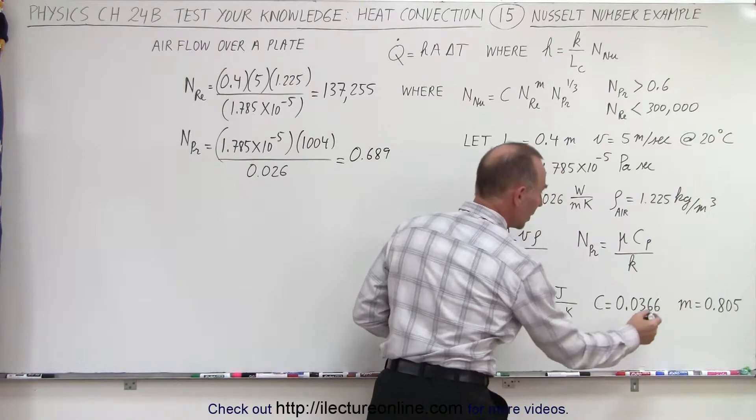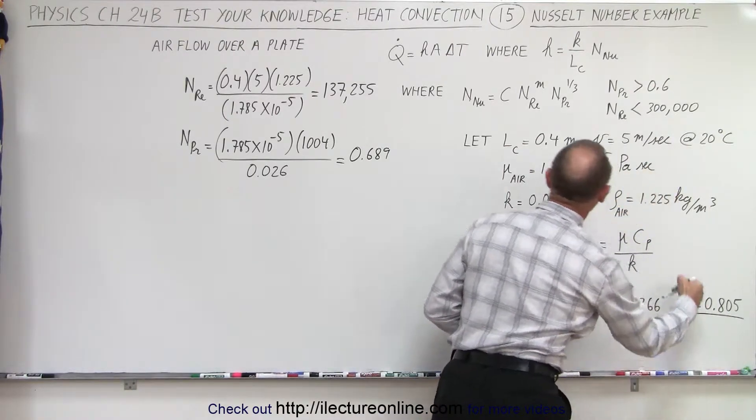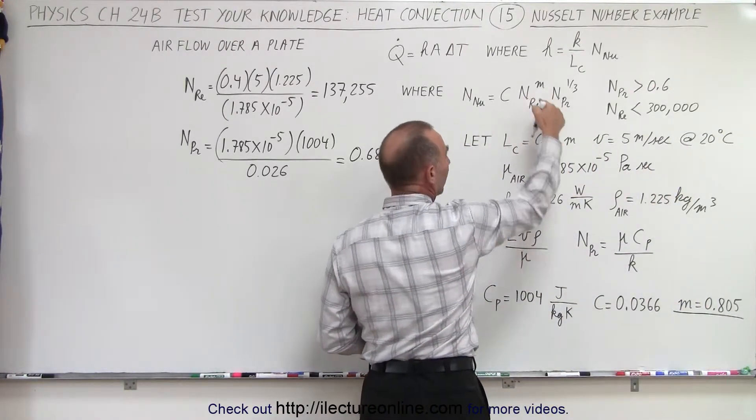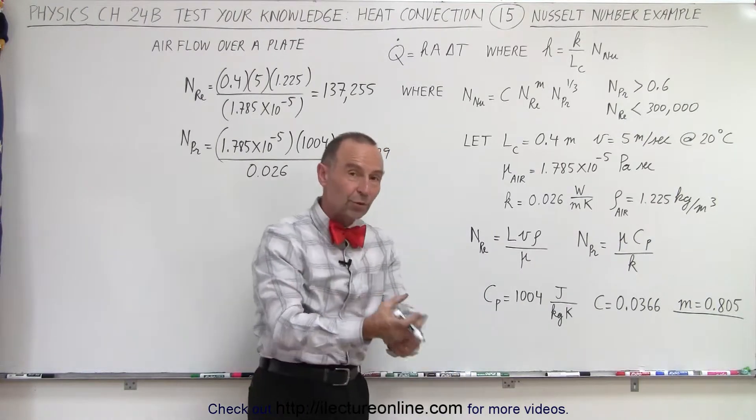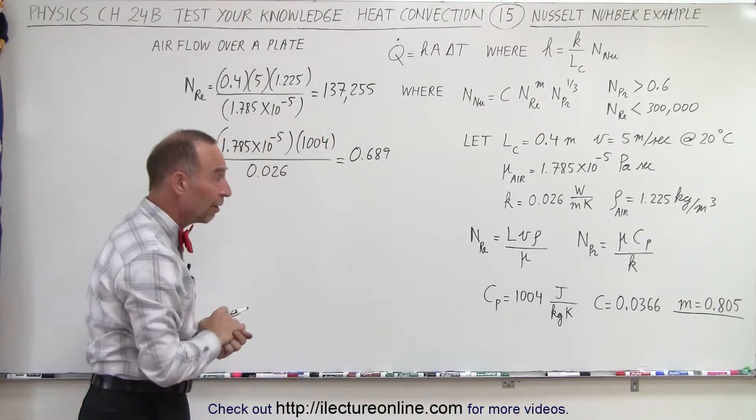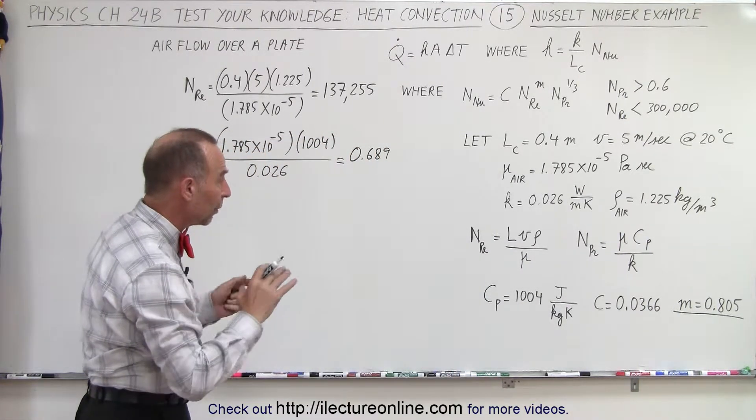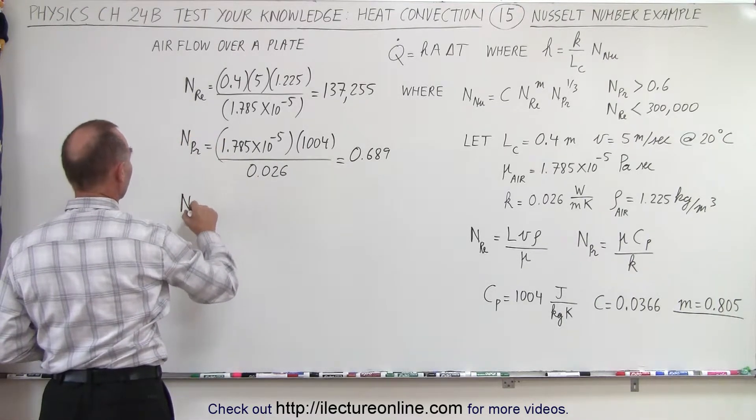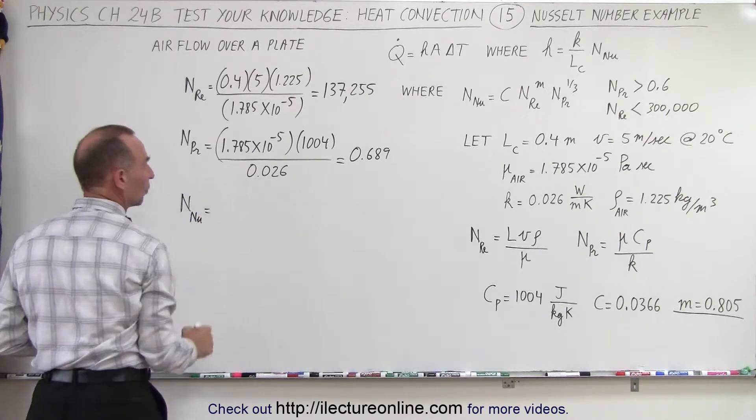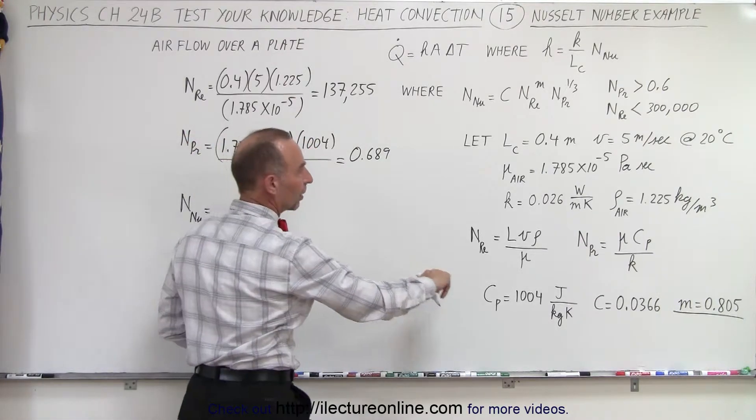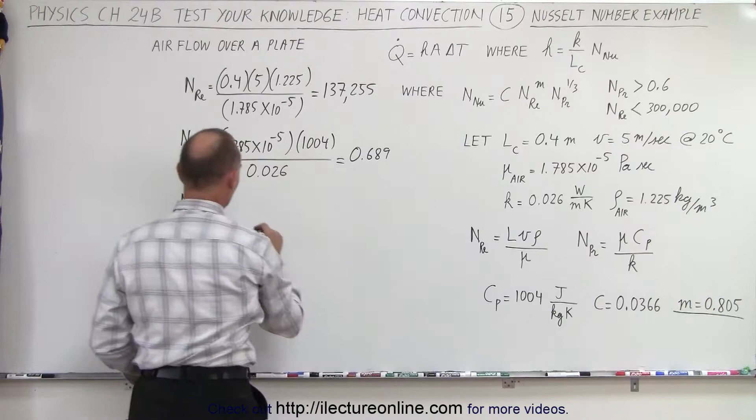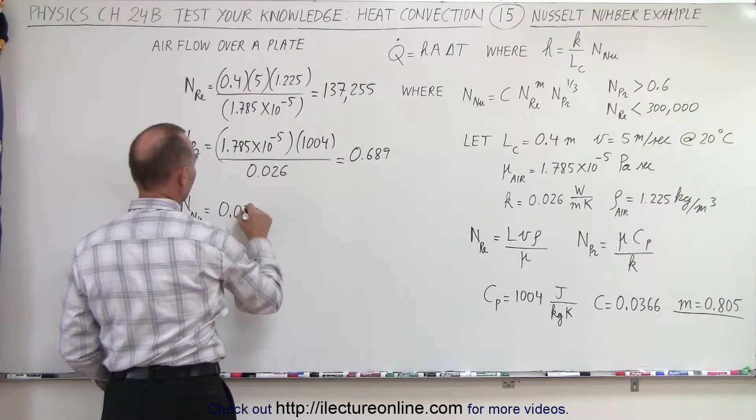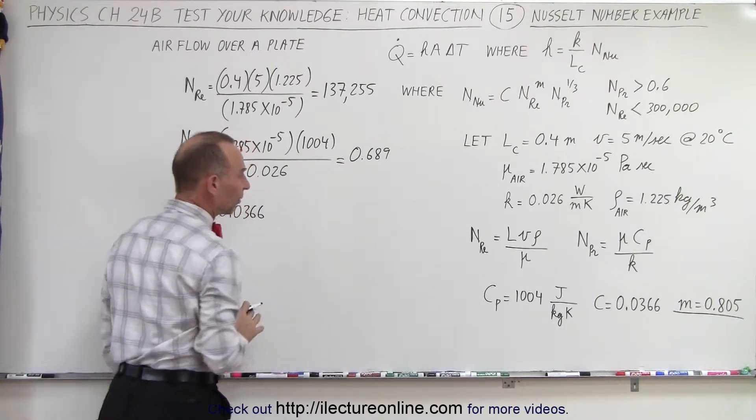And notice that we said that m, which is the exponent of the Reynolds number, was 0.805, which we can get out of the table that we saw a few videos ago. And now we're ready to go ahead and calculate the Nusselt number, N sub NU is equal to the constant. And the constant we said was going to be 0.0366. Again, we get that from the table.